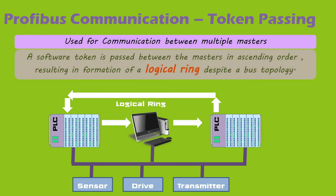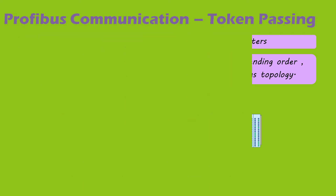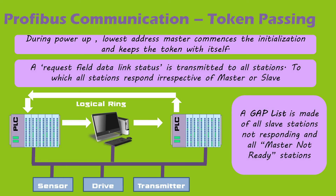The token passing mechanism is used for communication between multiple masters on the bus. A software token is passed between masters in ascending order. Although the physical topology is a bus, the sequential token passing creates a logical ring between the masters. During power-up, the master with the lowest station address commences initialization and keeps the token. It then transmits a request for data link status to each station in increasing address order, and the token is passed to the first master station that responds. Slave stations and non-ready masters are recorded in an address list called the gap list.